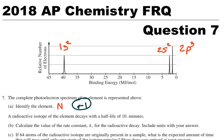Now a radioactive isotope of the element decays with a half-life of 10 minutes. That's important. So part B, calculate the value of the rate constant K for the radioactive decay. Include units with your answer.